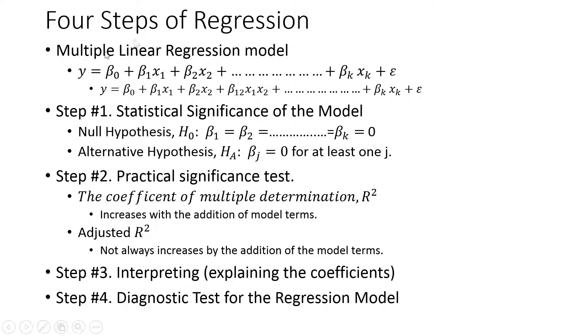In the four steps of hypothesis testing or four steps of linear regression model, the first step was to test the statistical significance, and the second step was to test the practical significance. Then, if they're both statistically and practically significant, we interpret the coefficients and explain them.